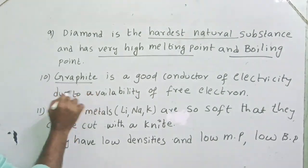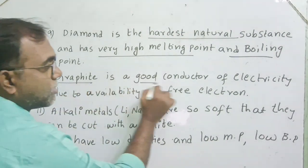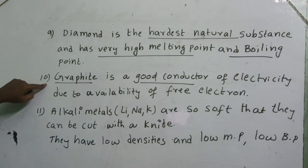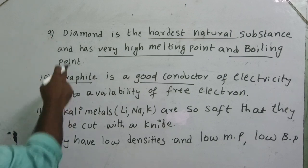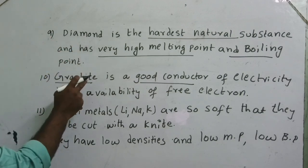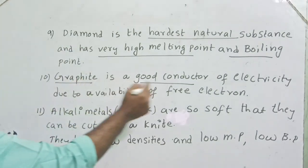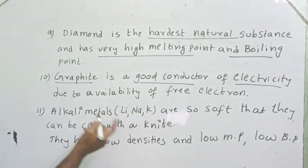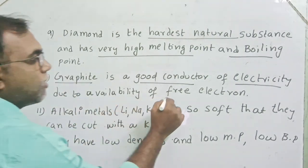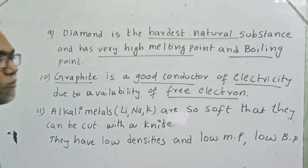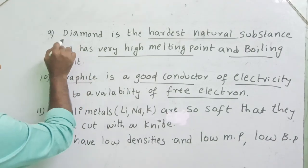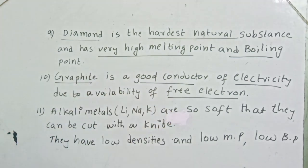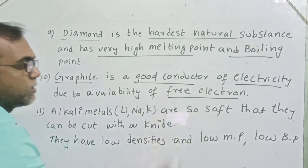Graphite is a good conductor of electricity. Graphite is also one of the allotropic forms of carbon — so diamond and graphite are both allotropic forms of carbon. But among these two, graphite is a good conductor of electricity because of the availability of free electrons in graphite, whereas diamond is not a good conductor of electricity.